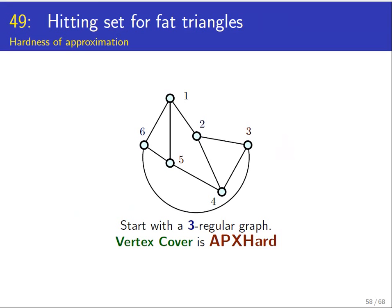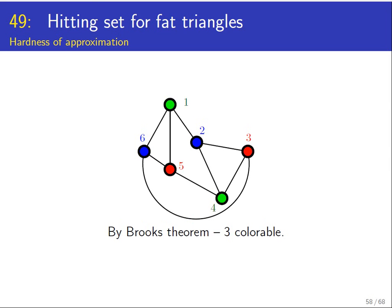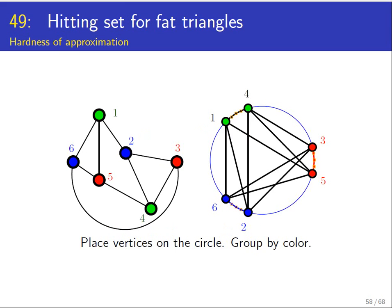How does one prove something like that? The basic idea is to start from a right APX-hard problem. In our case we're going to start with a three-regular graph where you want to find a vertex cover. This problem is APX-hard. By Brooks theorem this graph can be three-colored. We take those vertices and move them to a circle such that all the vertices of the same color are clustered together. We have three clusters that are very tight and 120 degrees from each other.